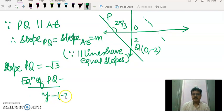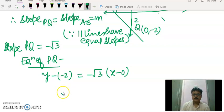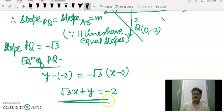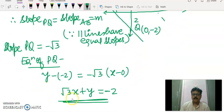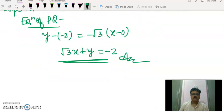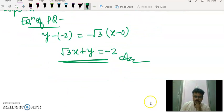y minus y1 is equal to m into x minus x1. So this is root 3x plus y is equal to minus 2. You can see this equation and this equation, the x coefficient and y coefficient both are same. This is how you can solve the question number 14.